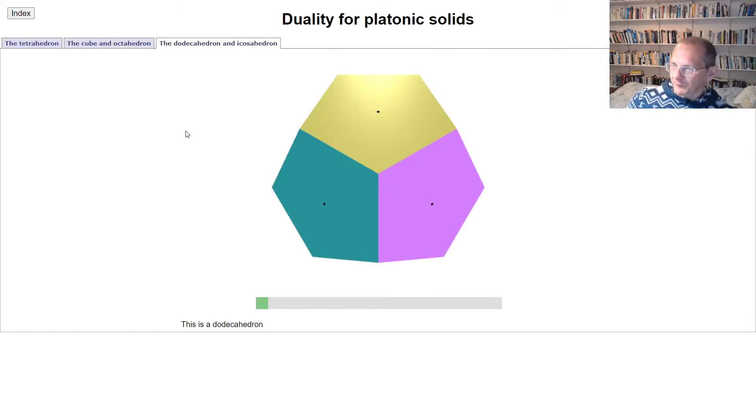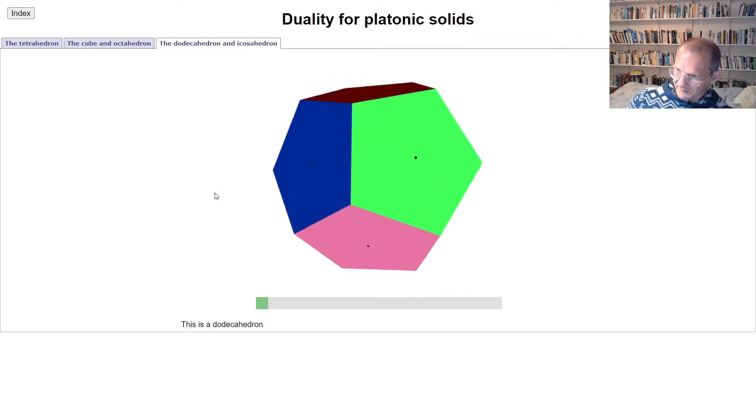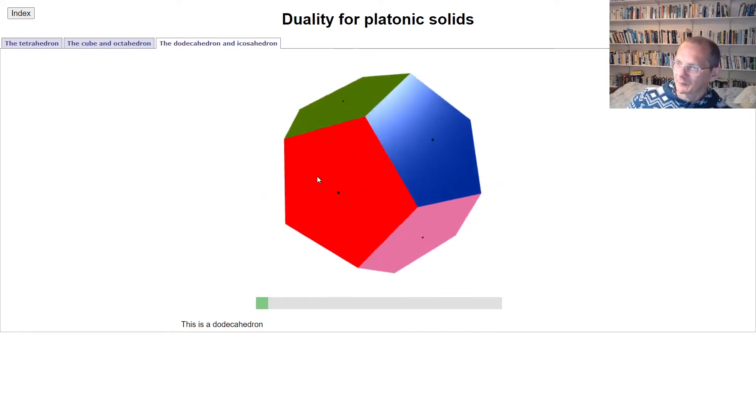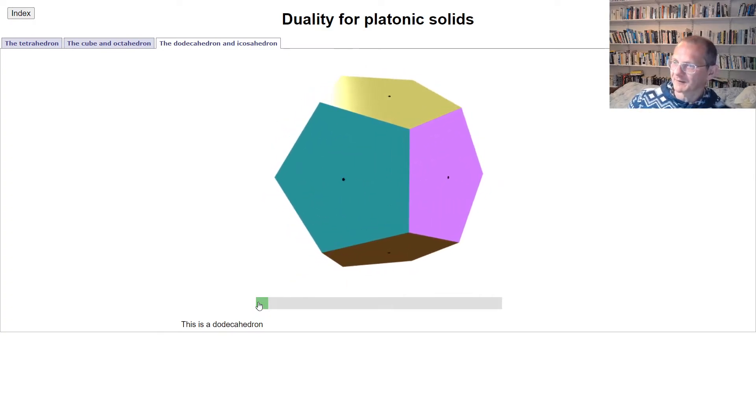And now we'll do the most complicated one of these. We can start with the dodecahedron like this. We've got our 12 pentagonal faces and we join up the centers of these 12 pentagonal faces.